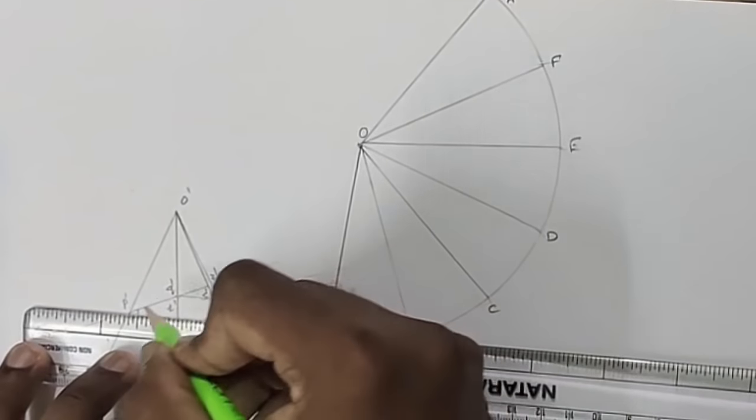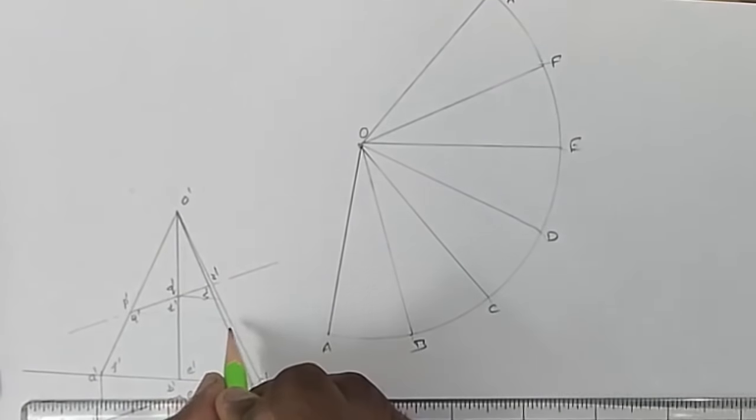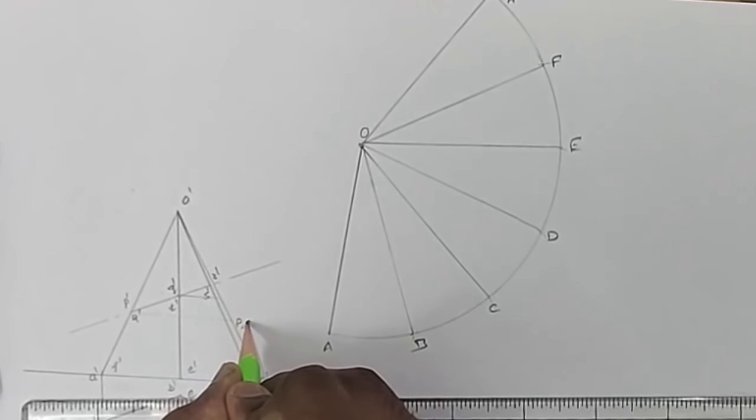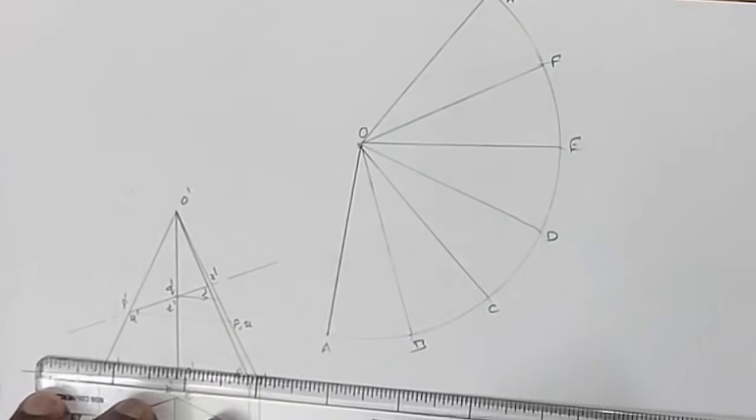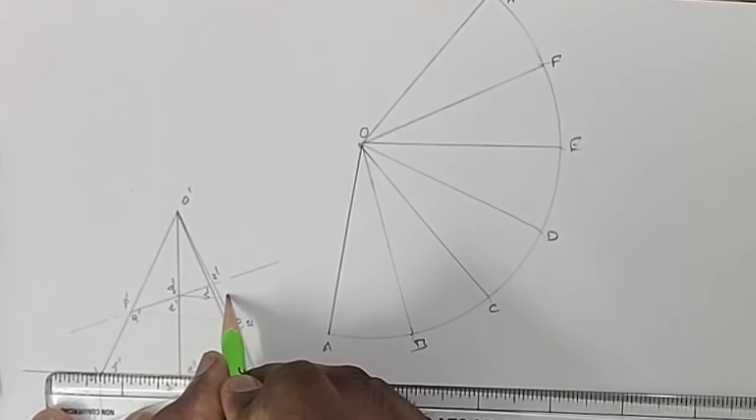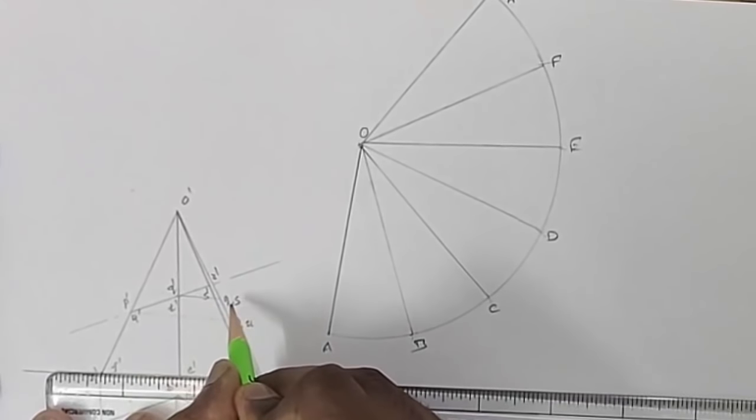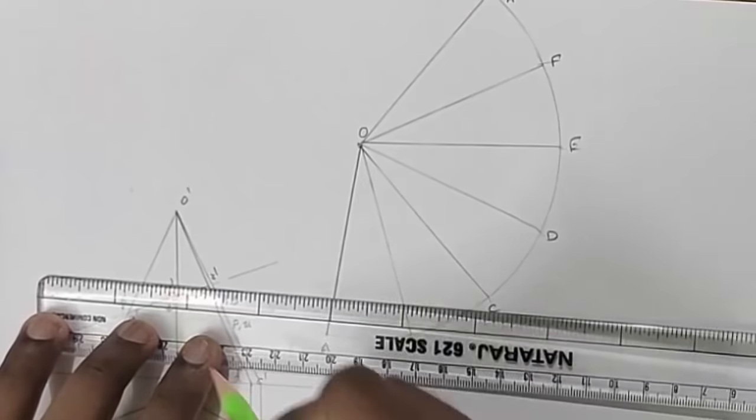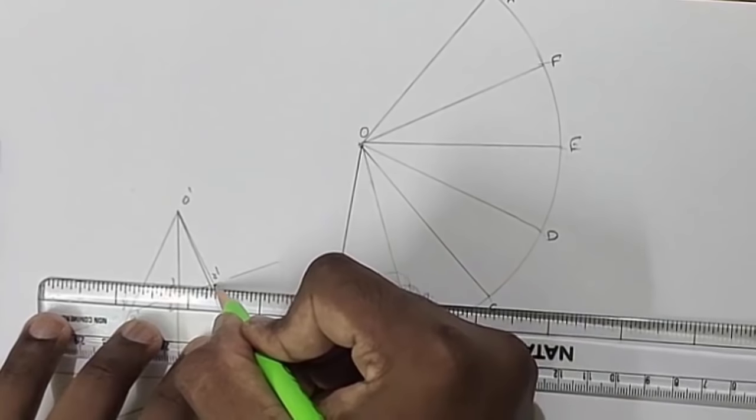This is the point P and U, so this is P and U. Then this is the point Q and S, and this is the point R.